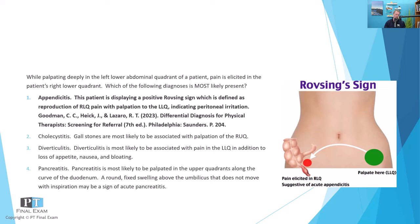As we proceed toward the April NPTE — I'm recording this on the day of the January NPTE — one fun myth that exists is that there is a curve to the scoring, meaning if more people perform poorly, a lesser score would be required to pass. That is simply not true. They set the passing score like a high jump bar, predetermined using item response theory. You simply have to exceed the predetermined minimum to pass, and it is very possible that 100% of students could pass on any given test day.